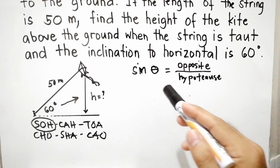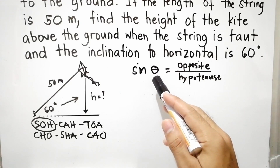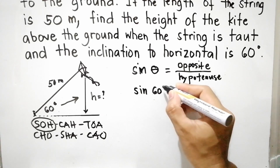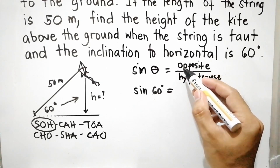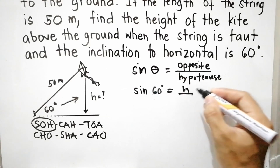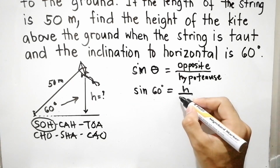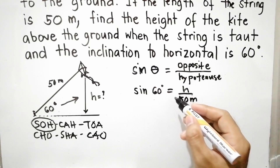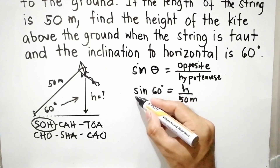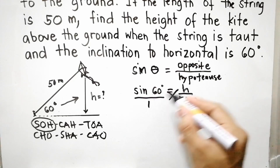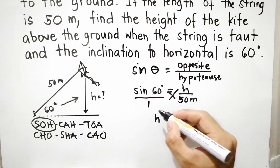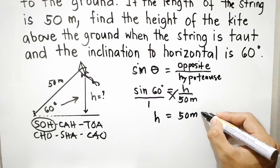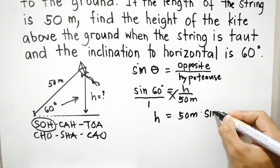Let us substitute the values into the formula. Theta is the angle, so sine 60 degrees equals the height (the missing value) over 50 meters (the hypotenuse). We are going to find the value of height. Cross multiplying — h times 1 equals 50 meters times sine 60 degrees.